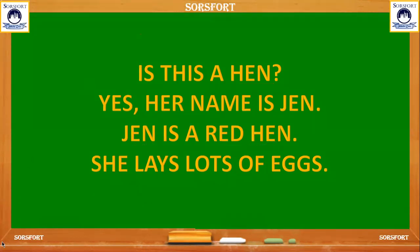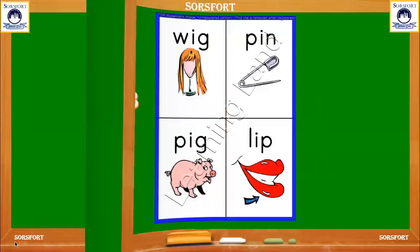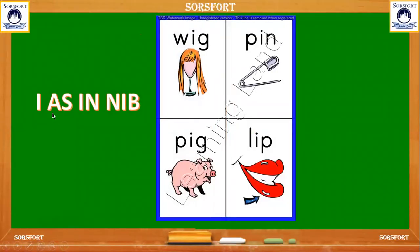And next we can see about I. I as in nib. Where is I in the nib? It is in the middle of N and B. W, I, G — wig. P, I, N — pin. P, I, G — pig. L, I, P — lip. These are all the words which are related to the letter I.